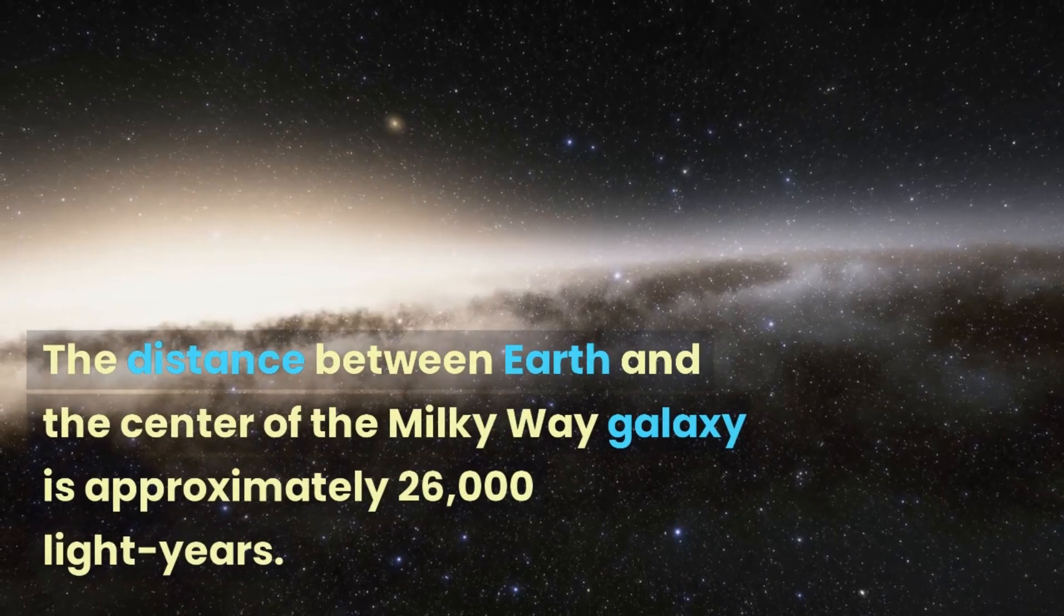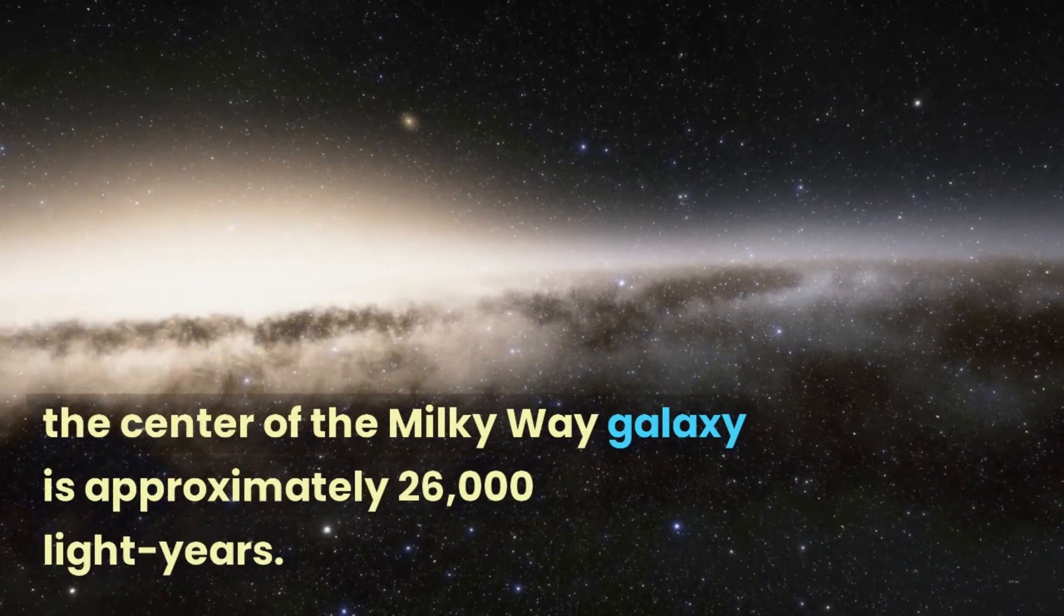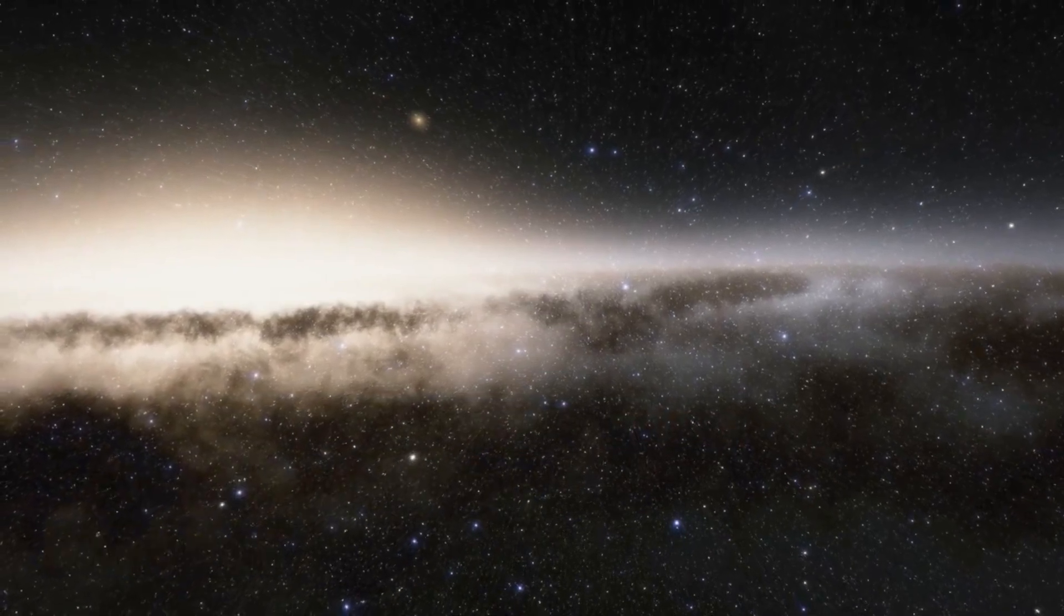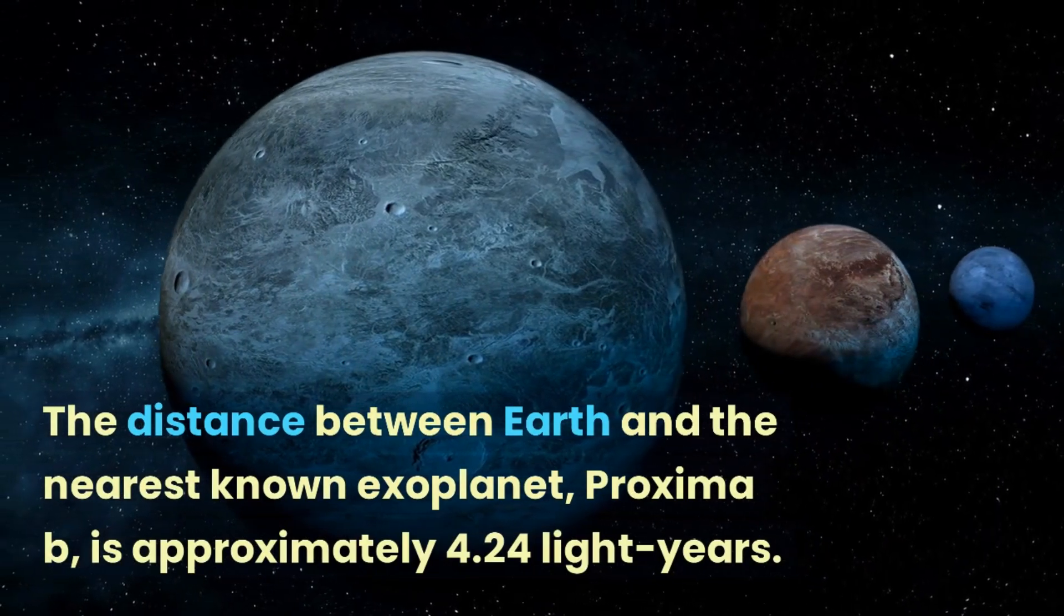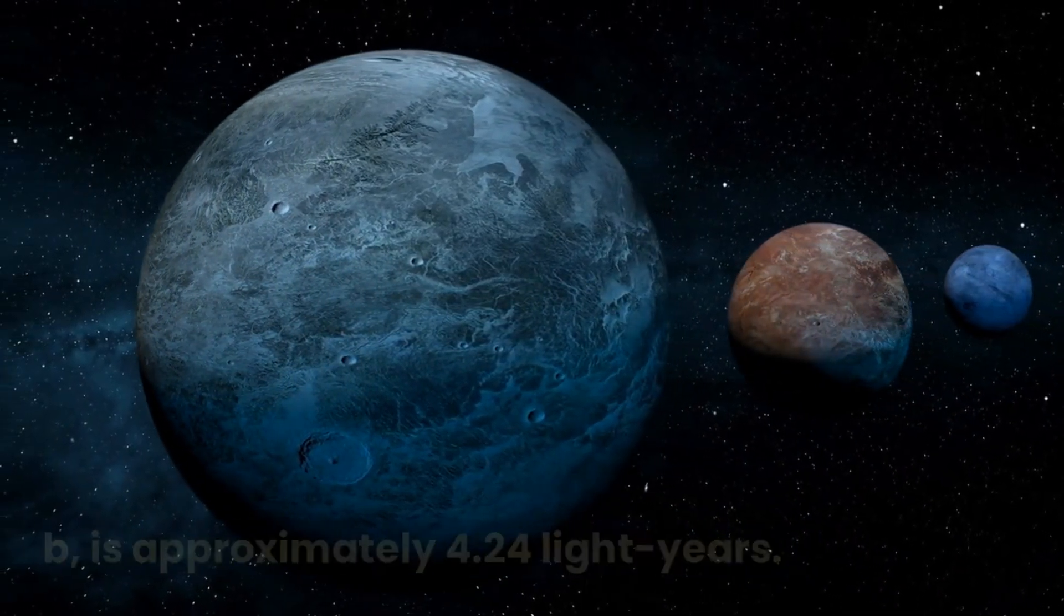The distance between Earth and the center of the Milky Way galaxy is approximately 26,000 light years. The distance between Earth and the nearest known exoplanet, Proxima b, is approximately 4.24 light years.